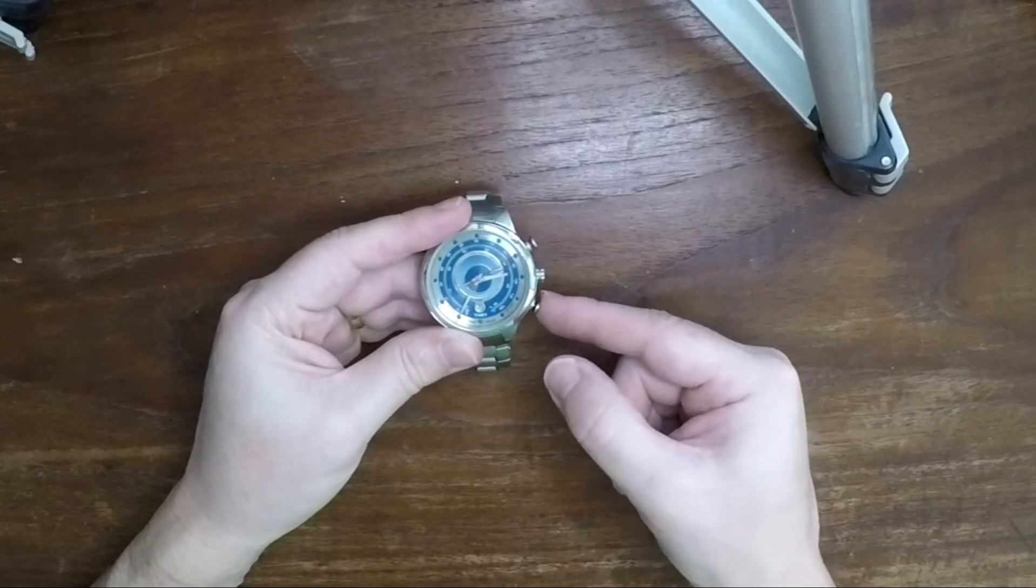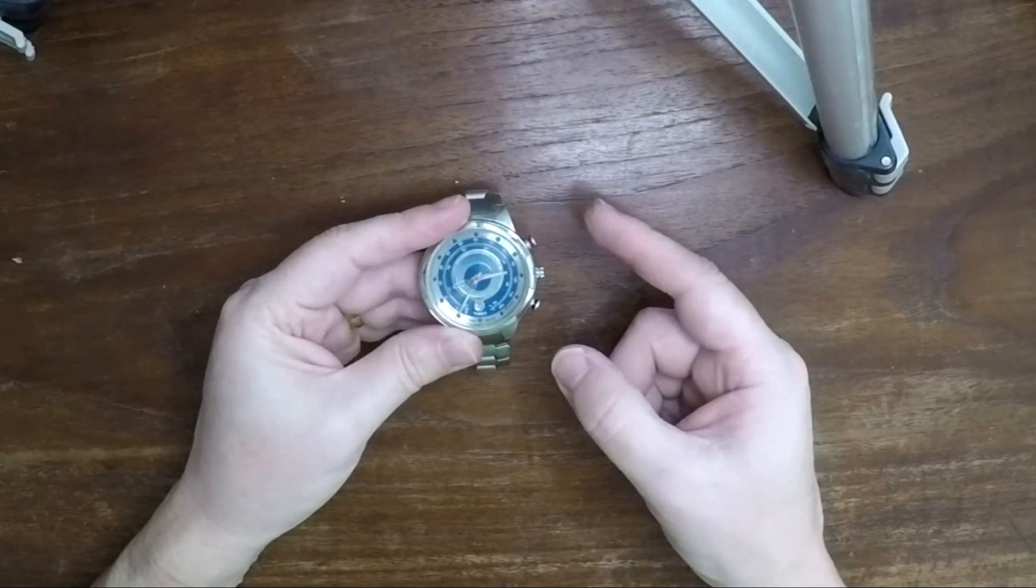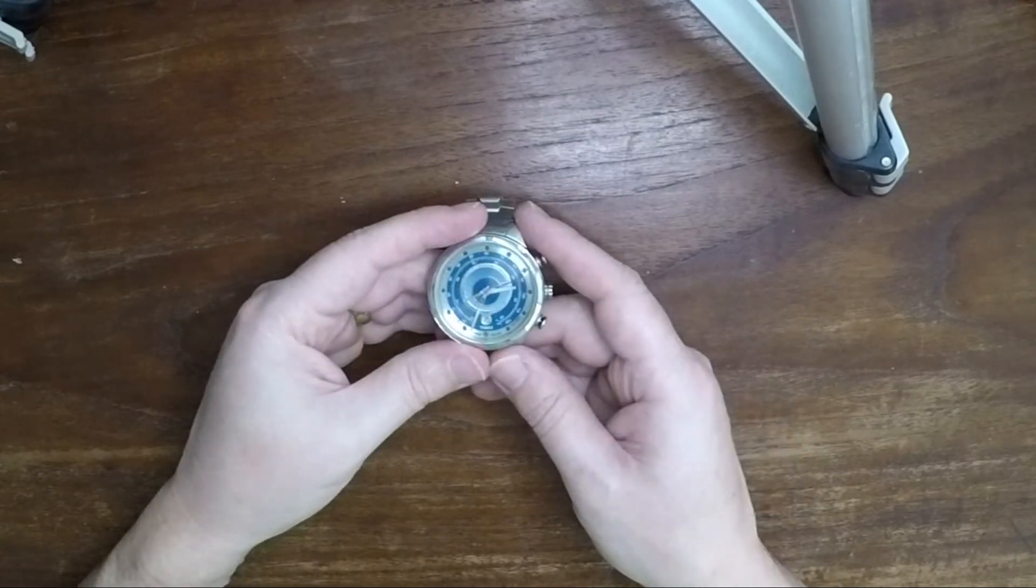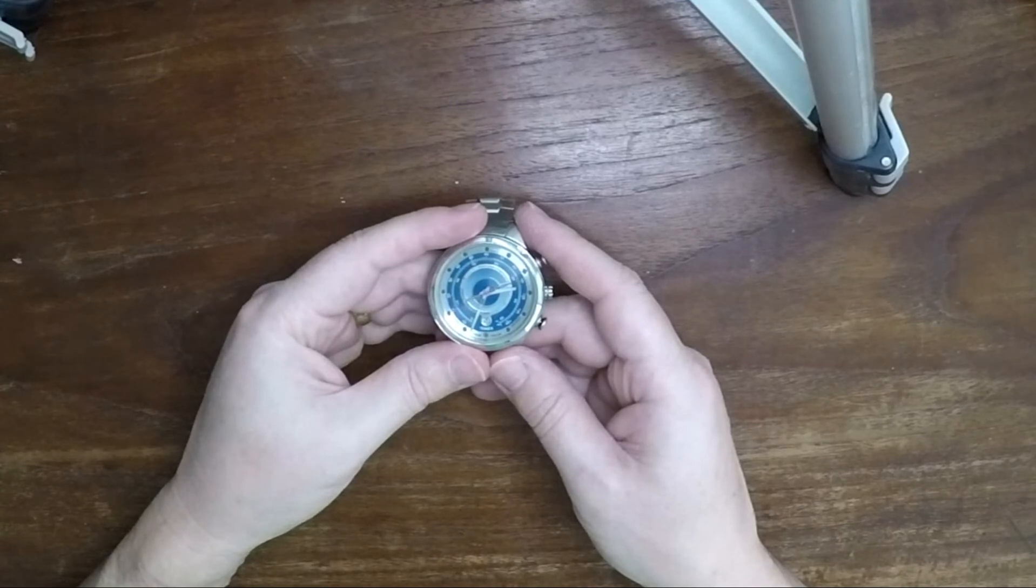But if I switch it to tide first and then I go back to the temperature, it will now do what it was doing before. It goes first to the temperature spot and then it goes around and points to the 90 degree temperature.